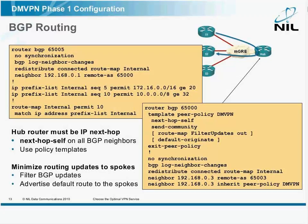It's recommended to use eBGP with different AS numbers on hubs and spokes. On the spoke side, you just configure the hub as the neighbor and you redistribute connected interfaces, or you just leave them with a network statement.